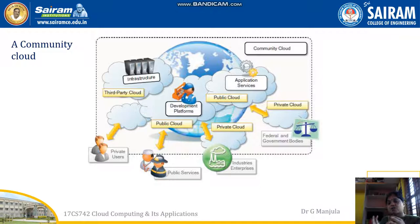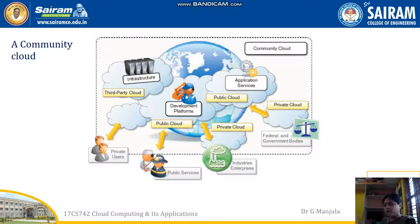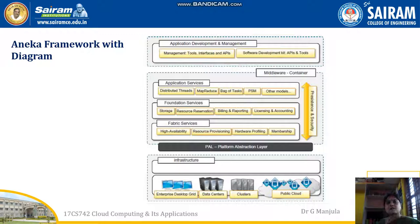The government bodies and federal information form one independent private cloud. Public services like those for doctors or the military come under a public cloud. Some clouds are for private users who use it only for their particular job — processing and sharing information. Industries and enterprises come under the private cloud category. A community cloud is one cloud that talks about tasks pertaining to one domain, one cadre, or one set of similar jobs.